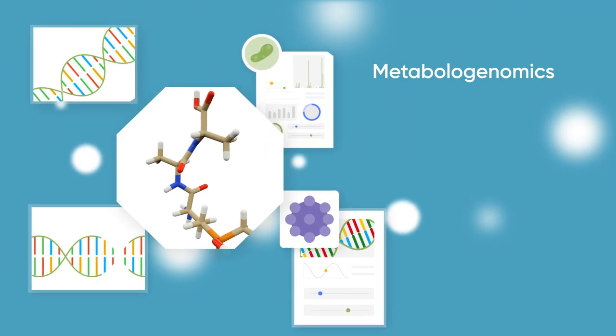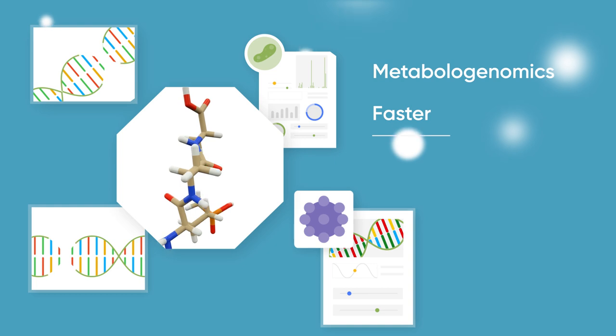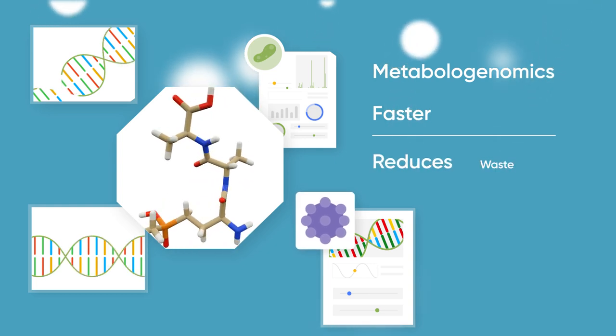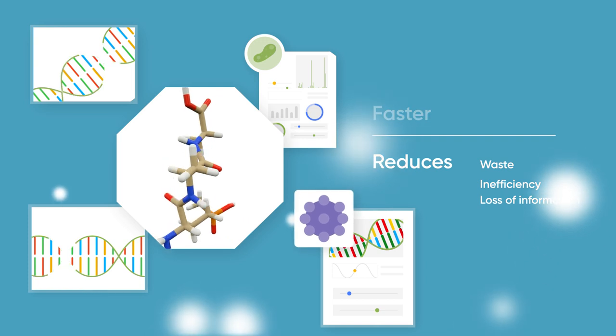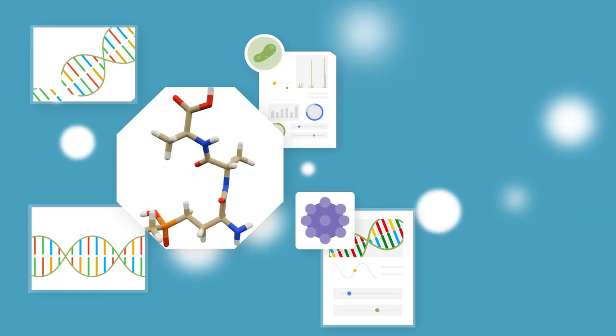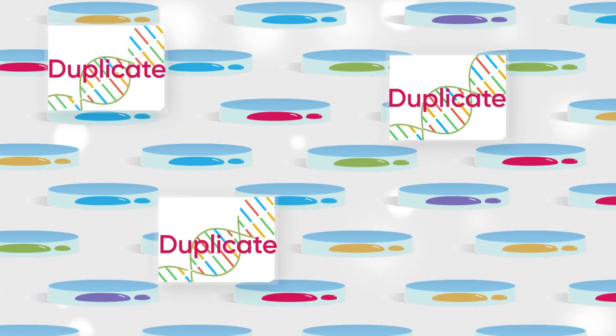Metabologenomics makes the process of finding new natural products much faster and greatly reduces the waste, inefficiency, and loss of information associated with doing things the traditional way. In particular, we avoid rediscovery issues, which plague current labs and burn time and money for many leading organizations.